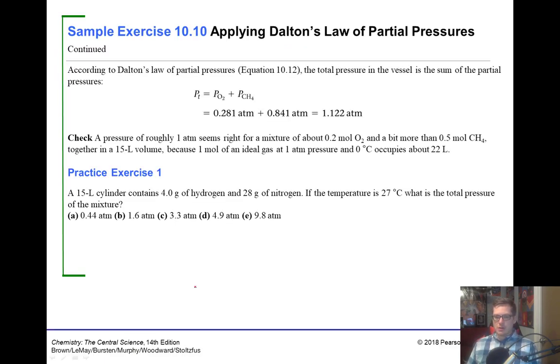So here we go. We're just going to do a practice problem here. It says, a 15 liter cylinder contains 4.0 grams of hydrogen and 28 grams of nitrogen. If the temperature is 27 degrees Celsius, what is the total pressure of the mixture? Well, we just learned from Dalton's law that the total pressure is equal to the pressures of each individual thing. So that'd be the pressure of the hydrogen plus the pressure of the nitrogen. And that's the only things that we have in our container, in this 15 liter cylinder.